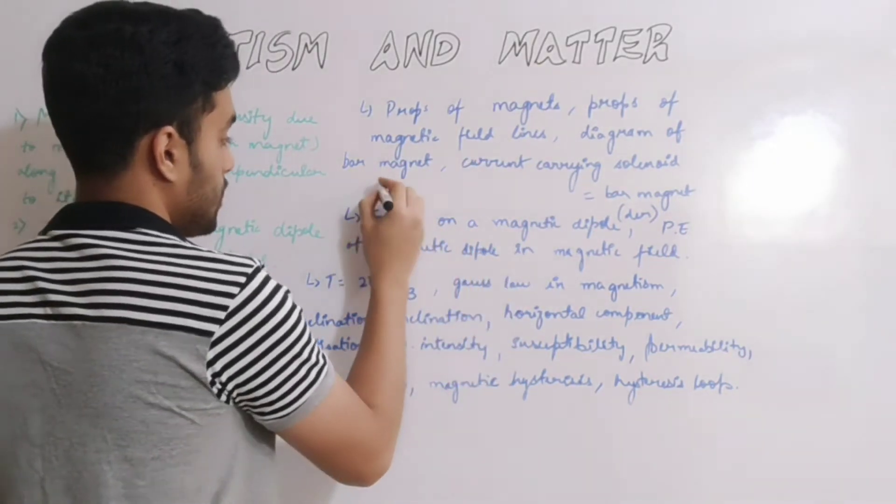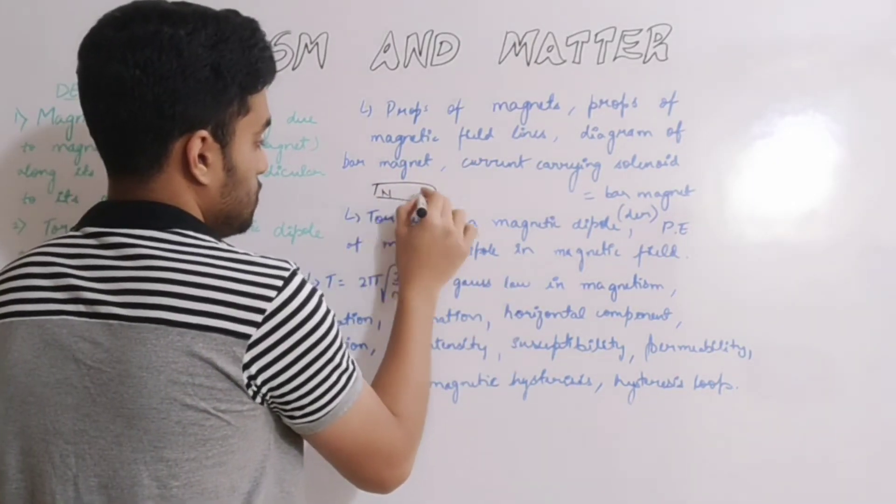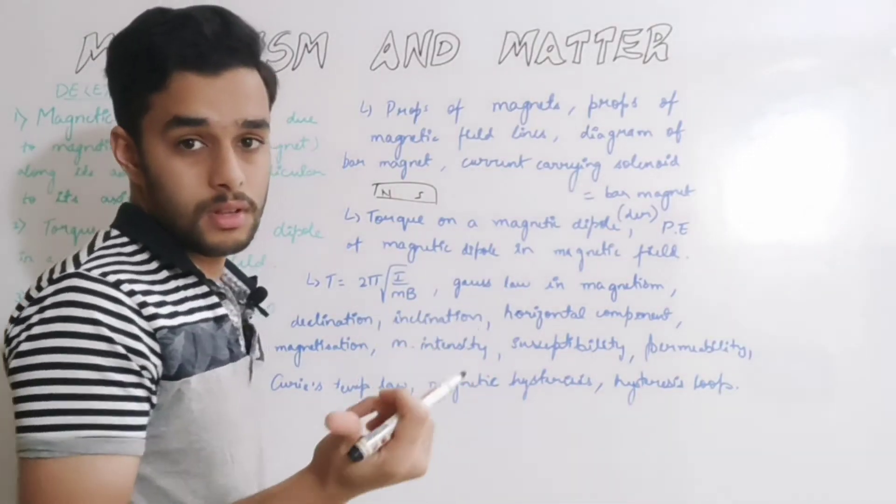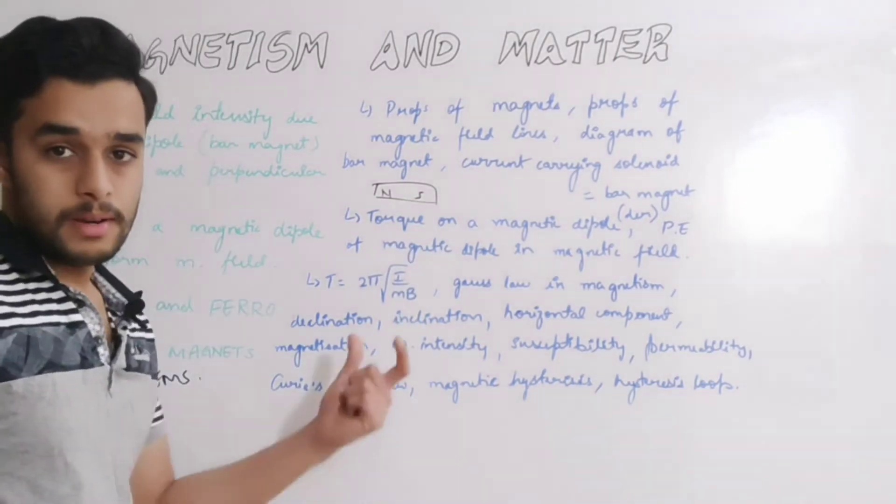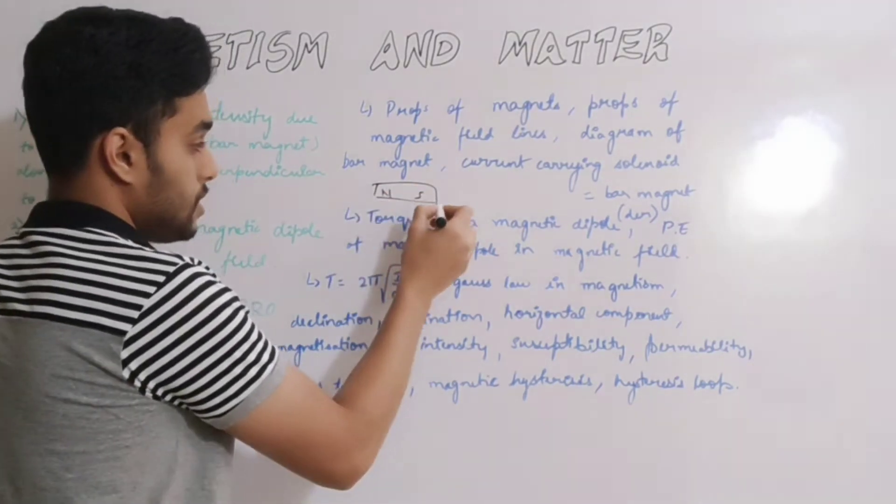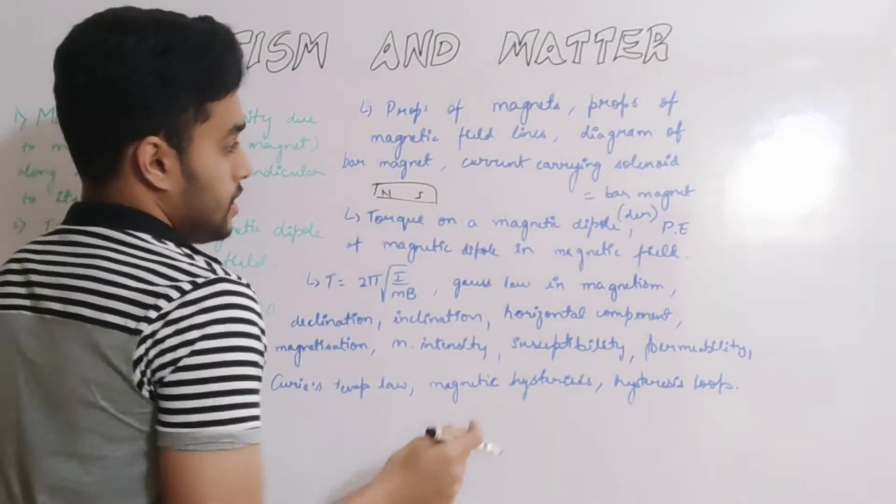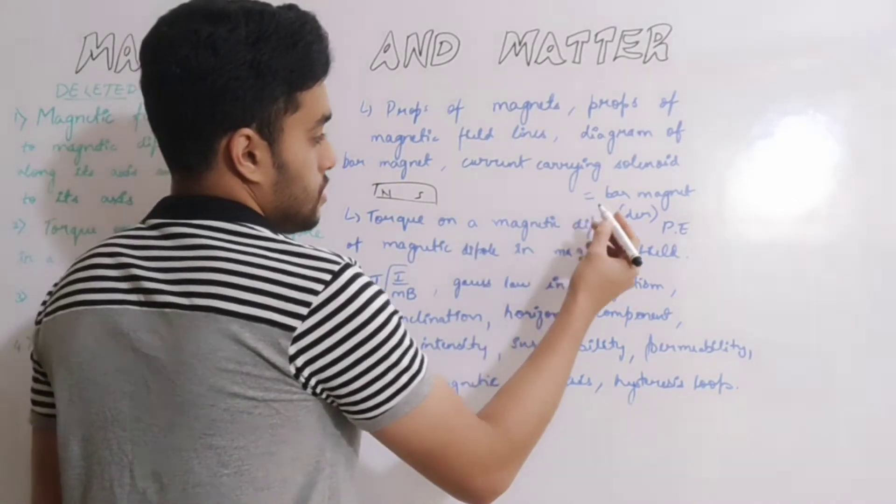Topics include properties of magnetic field lines, diagram of bar magnet with north and south poles mentioned, magnetic field lines from south to north inside, north to south outside. You need to represent this diagram properly. This question is important for one mark. Next thing is current carrying solenoid is equal to bar magnet derivation.